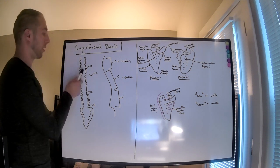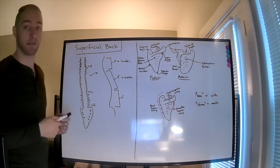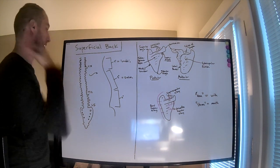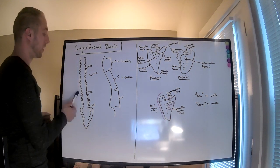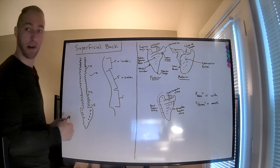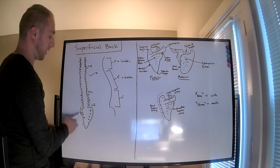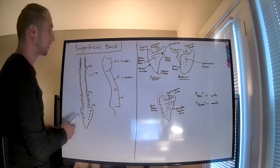One of the palpable landmarks to note is C7, which is the bottom of the cervical chain. There are seven cervical vertebrae, 12 thoracic, and five lumbar, as well as the sacrum and coccyx.